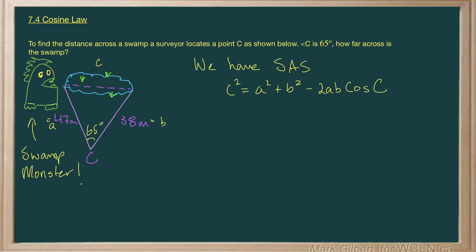Let's plug in what we know. C squared is equal to 47 squared plus 38 squared minus 2 times 47 times 38 times the cosine of 65 degrees.